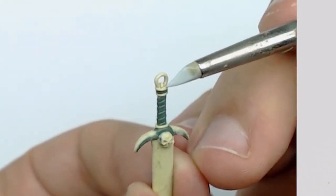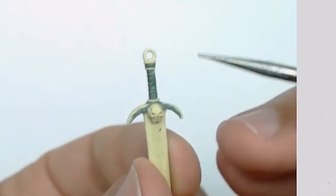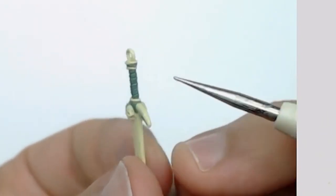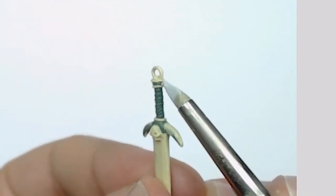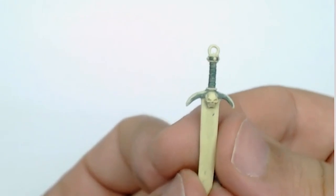Sometimes you'll see that your putty doesn't necessarily stick to the surfaces. At this time, as you can see, I put just a little bit of super glue to make sure my small ball will be easy to attach.